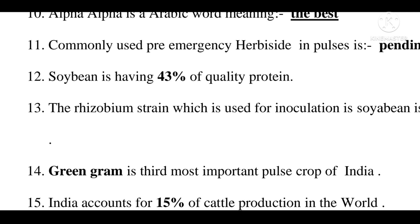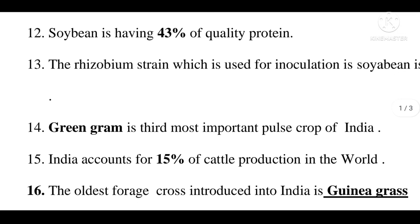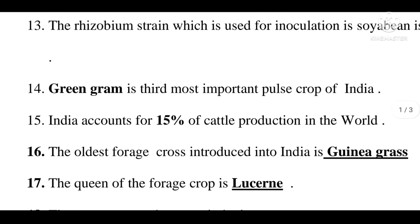Among pulse crops, green gram holds 3rd place in production.